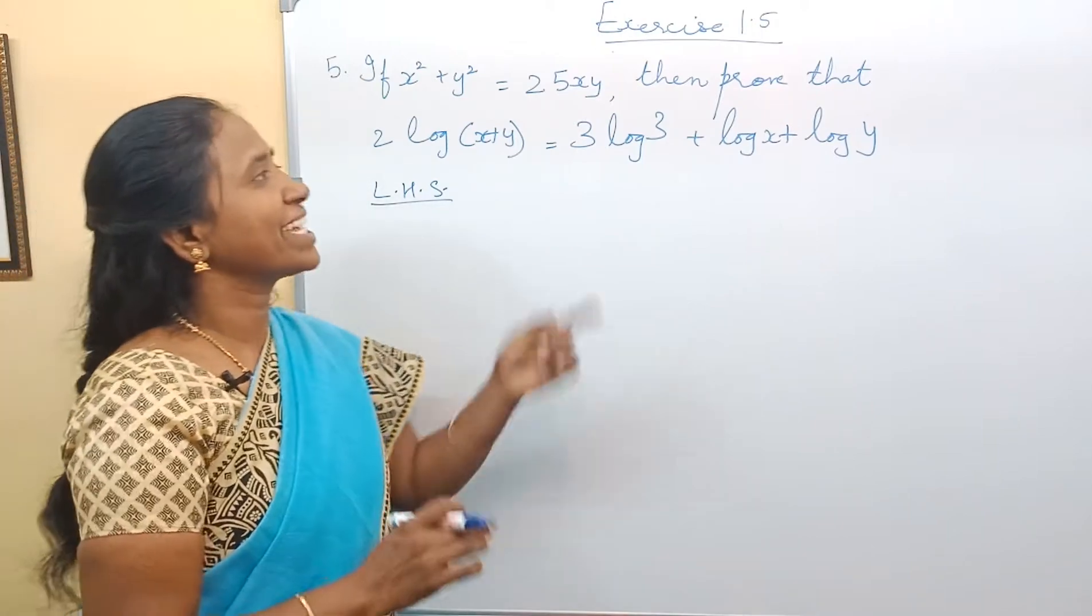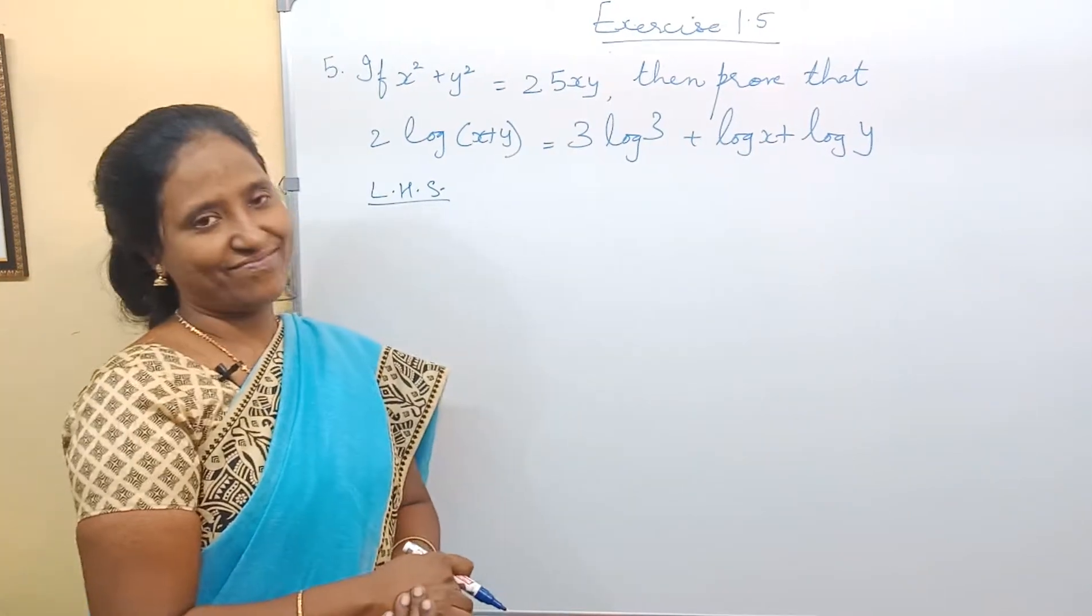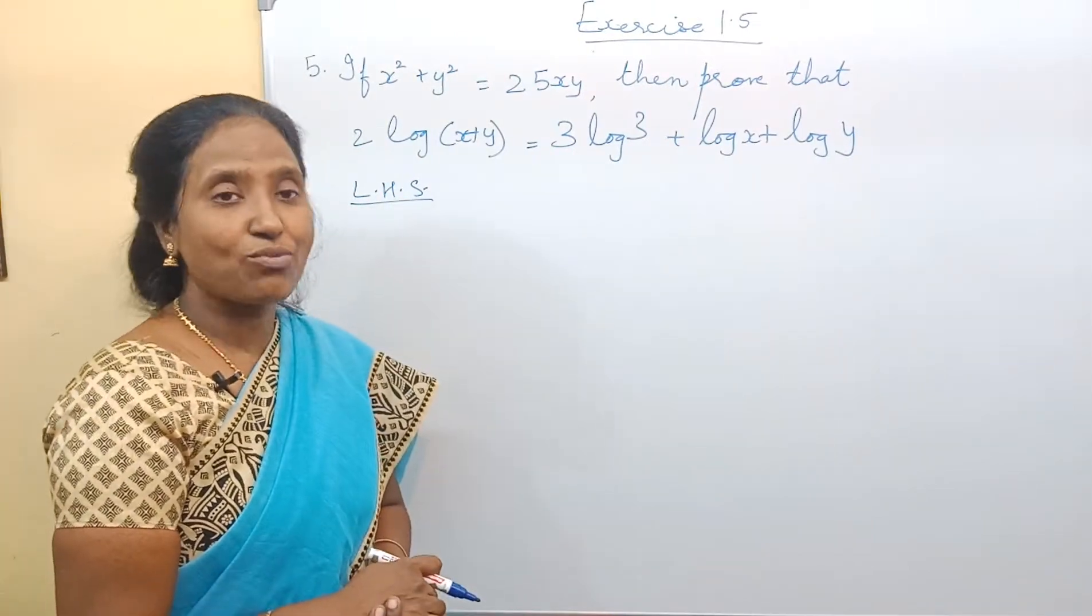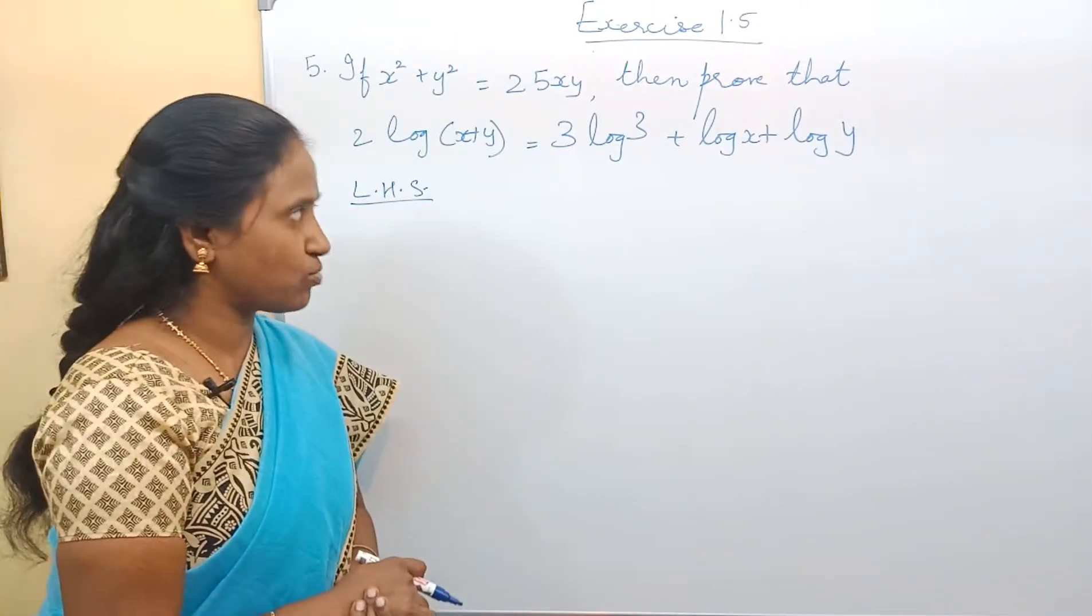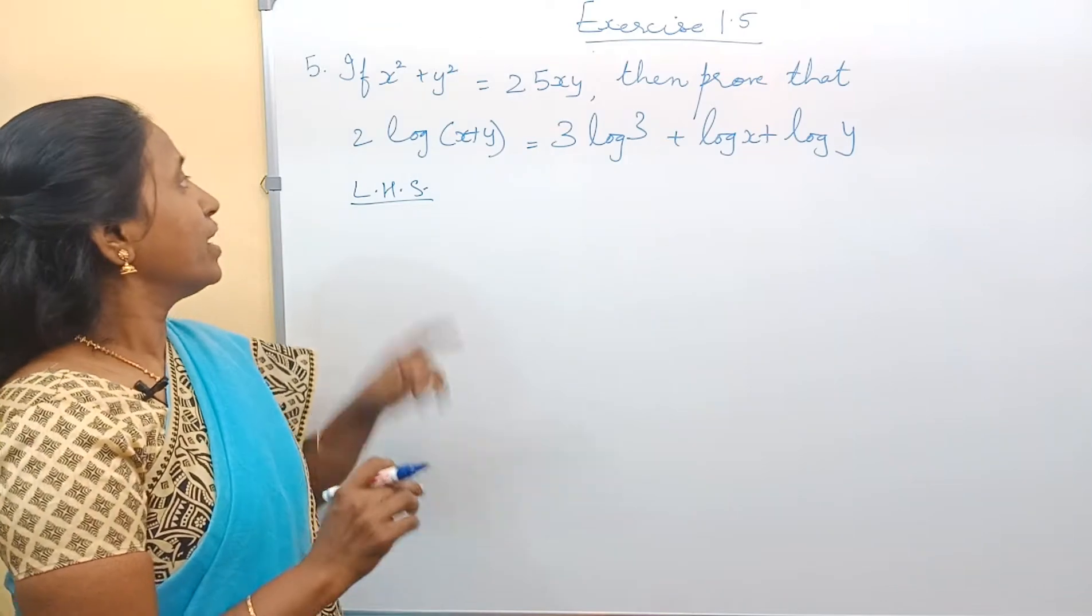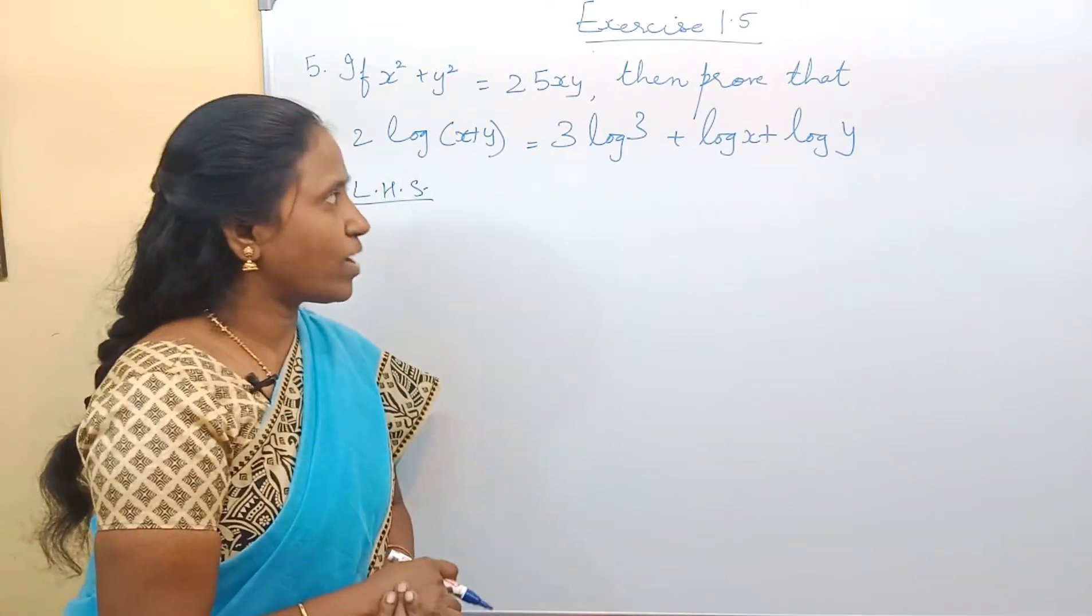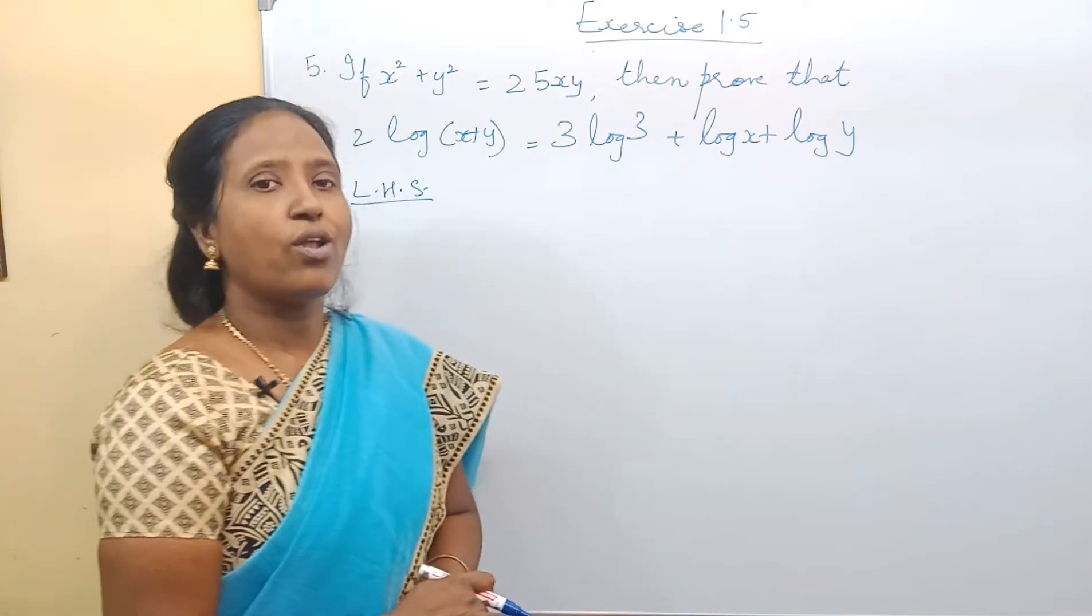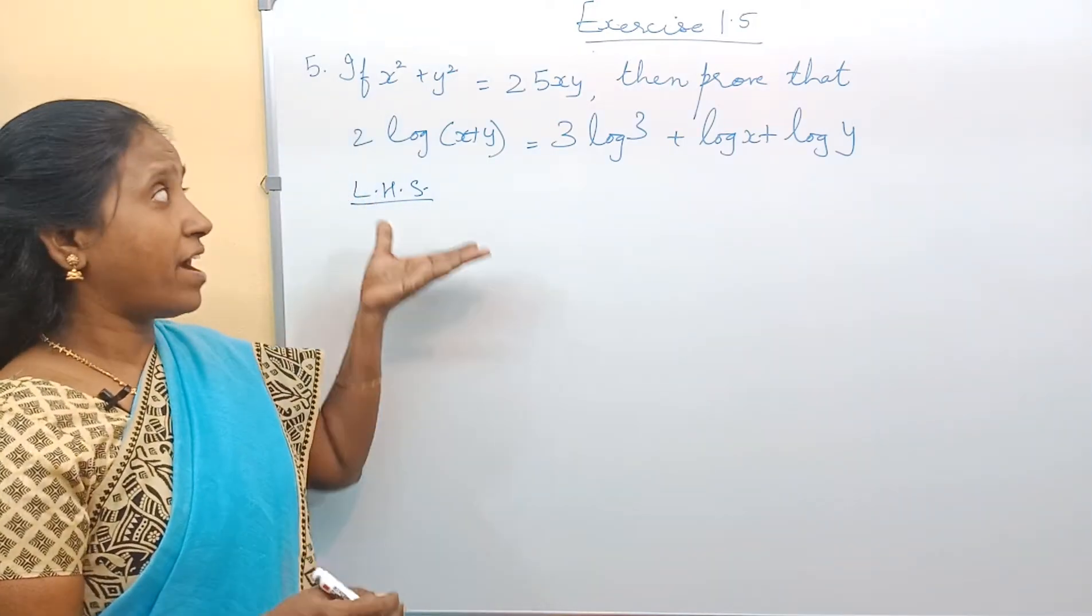On to the fifth sum of Exercise 1.5. Let's read the question. If x² + y² = 25xy, then prove that 2 log(x+y) = 3 log 3 + log x + log y. Right? Now...